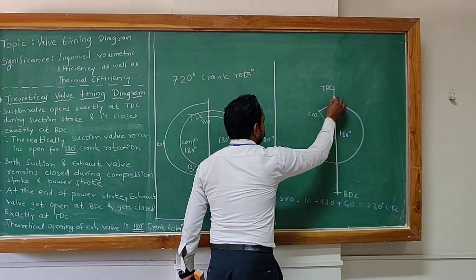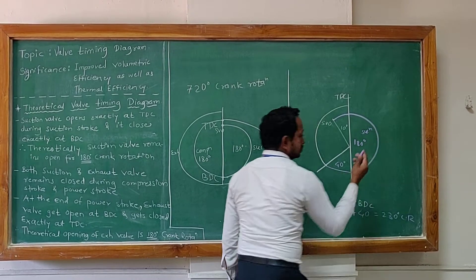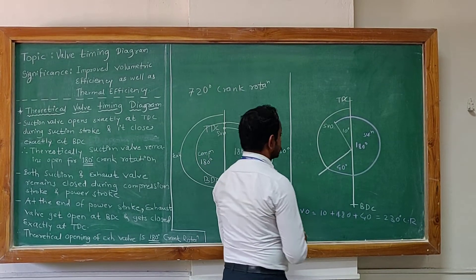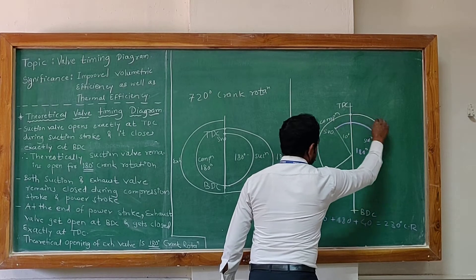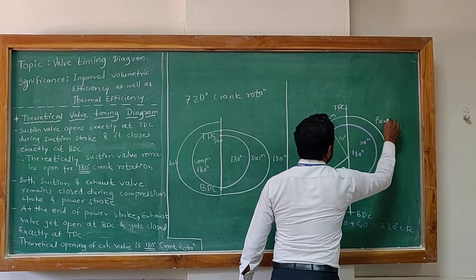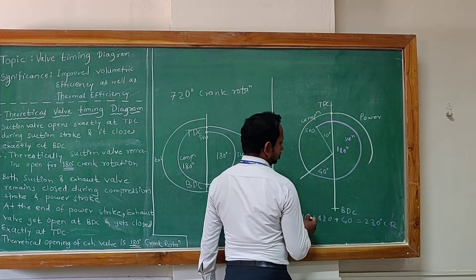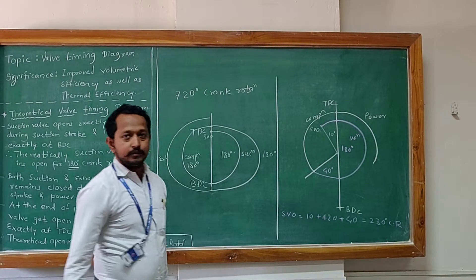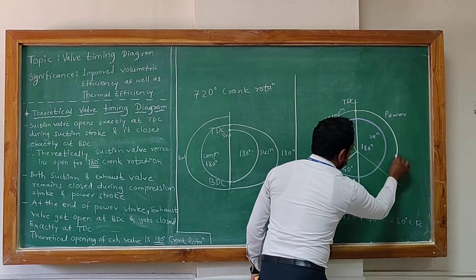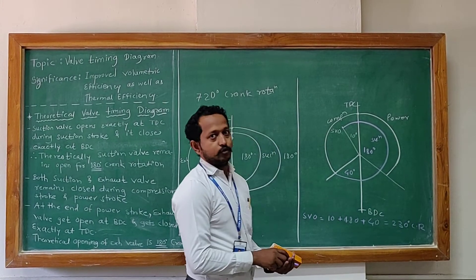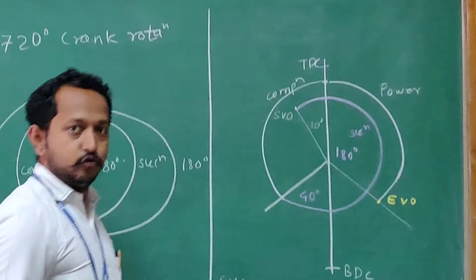Then there will be a normal compression stroke. I have used a purple color chalk for the suction valve. Then a compression stroke up to TDC. Then a power or expansion stroke. But instead of opening the exhaust valve at BDC, in the actual cycle it will be opened somewhere around 40 degrees before BDC. So the exhaust valve opens at 40 degrees before BDC.